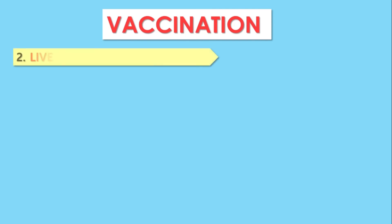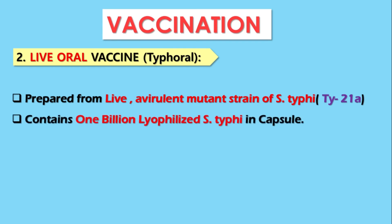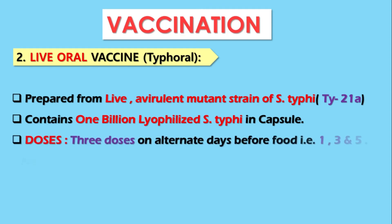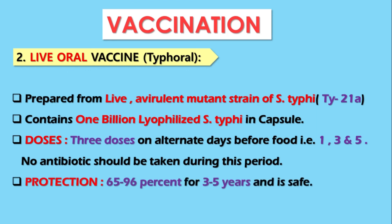The second vaccine for enteric fever is the live oral vaccine — the Typhoral vaccine (Ty21a). It is prepared from the live avirulent mutant strain of Salmonella typhi, designated TY21A. Each capsule contains 1 billion live organisms of S. typhi. Three doses are given on alternate days — day 1, day 3, and day 5 — taken before food. An important precaution is that no antibiotic should be taken during this period. It gives protection of about 65 to 96% for 3 to 5 years and is very safe.